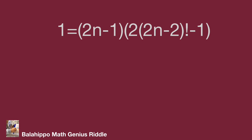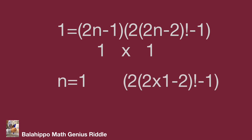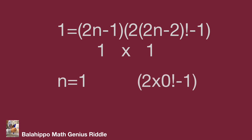This gives 1 equals (2n minus 1) multiplied by 2 times (2n minus 2) factorial minus 1. Since both quantities on the right side must multiply to 1, and 1 is a positive integer, we set 2n minus 1 equals 1, giving n equals 1. Substituting n equals 1 into the second quantity: 2 times (2 times 1 minus 2) factorial minus 1 equals 2 times 0 factorial minus 1 equals 2 minus 1 equals 1. So n equals 1 satisfies the criteria — it is the answer.